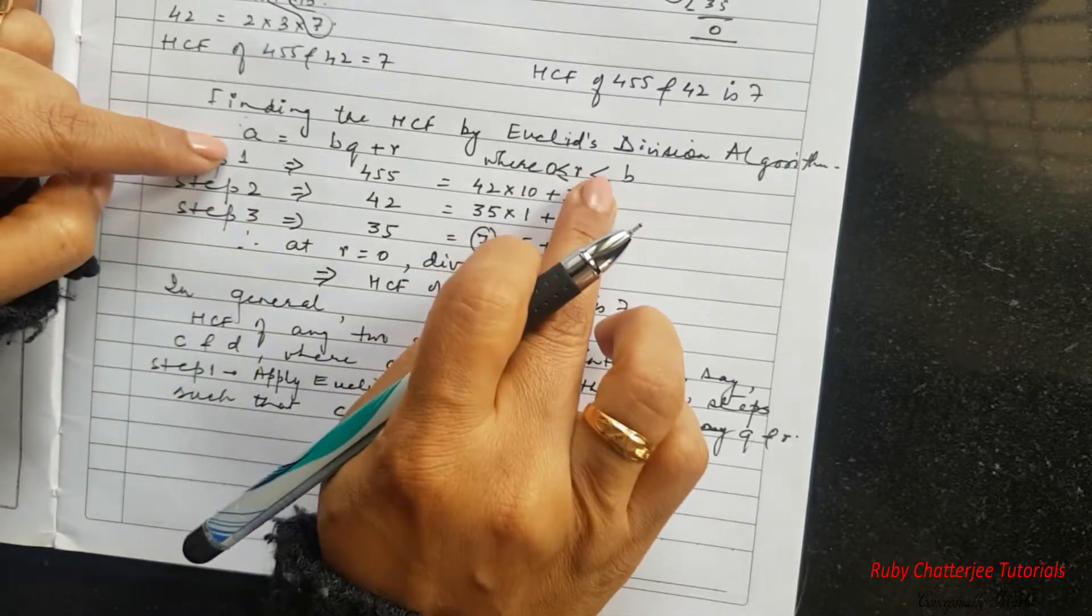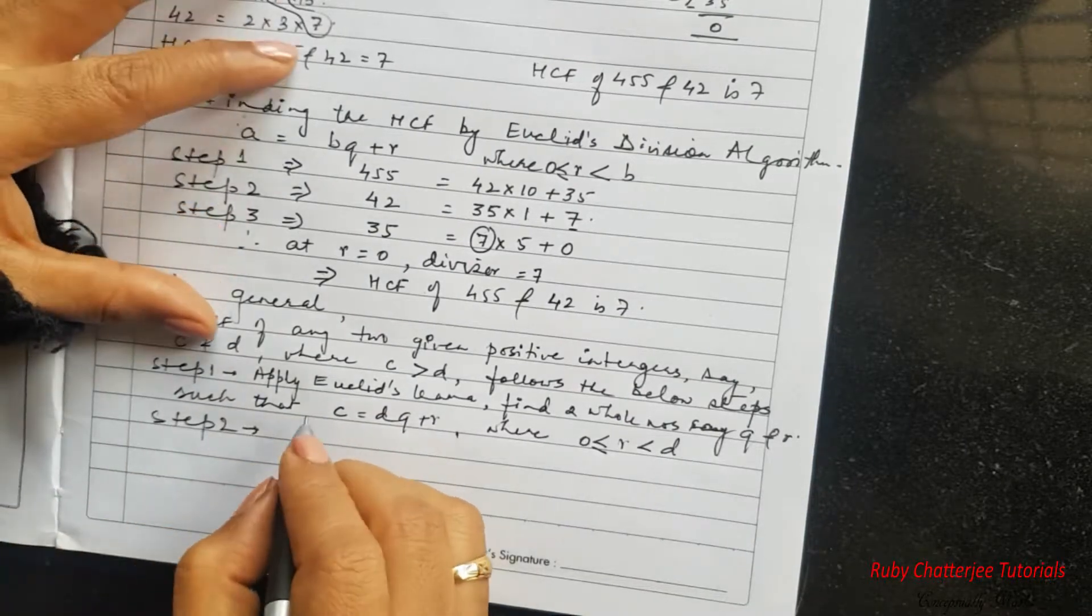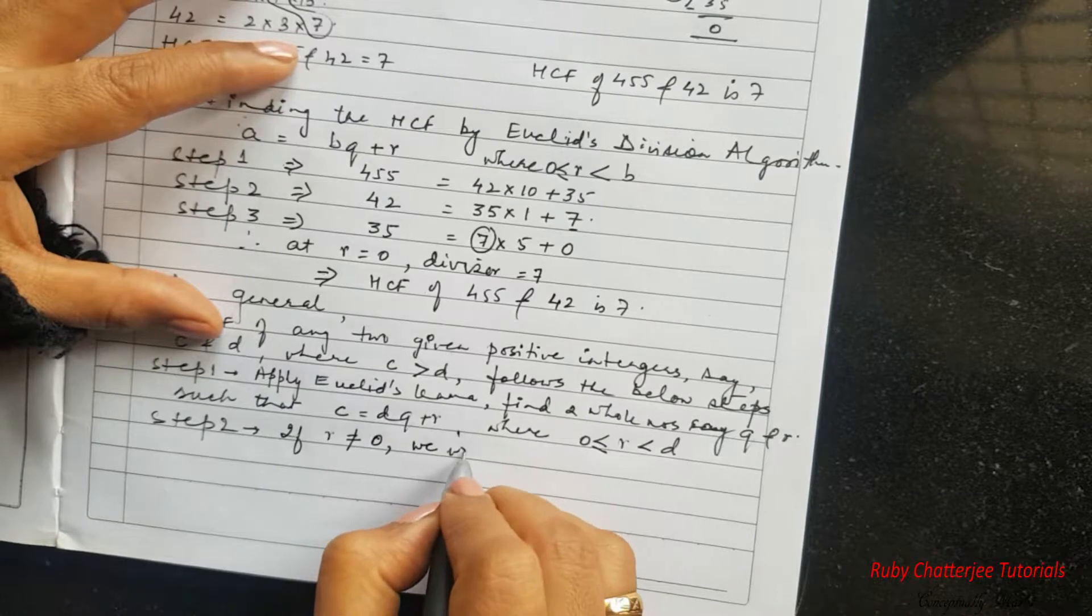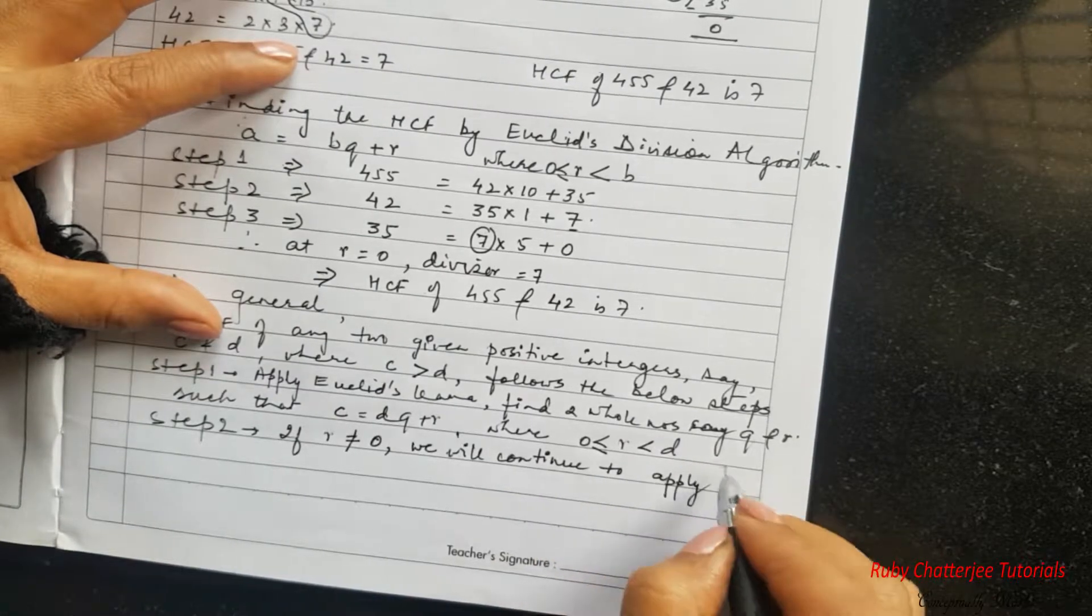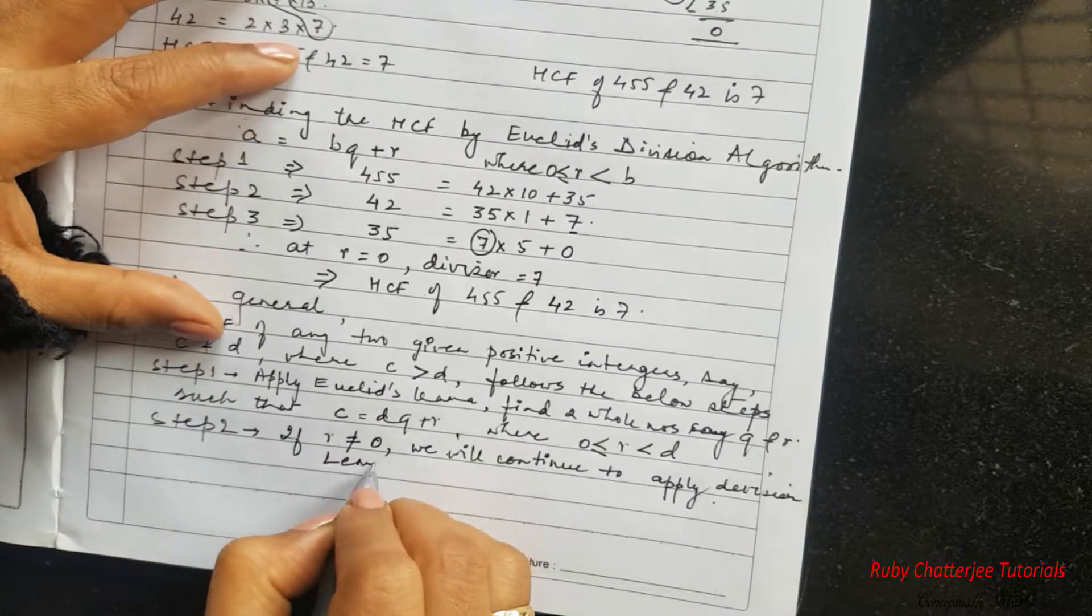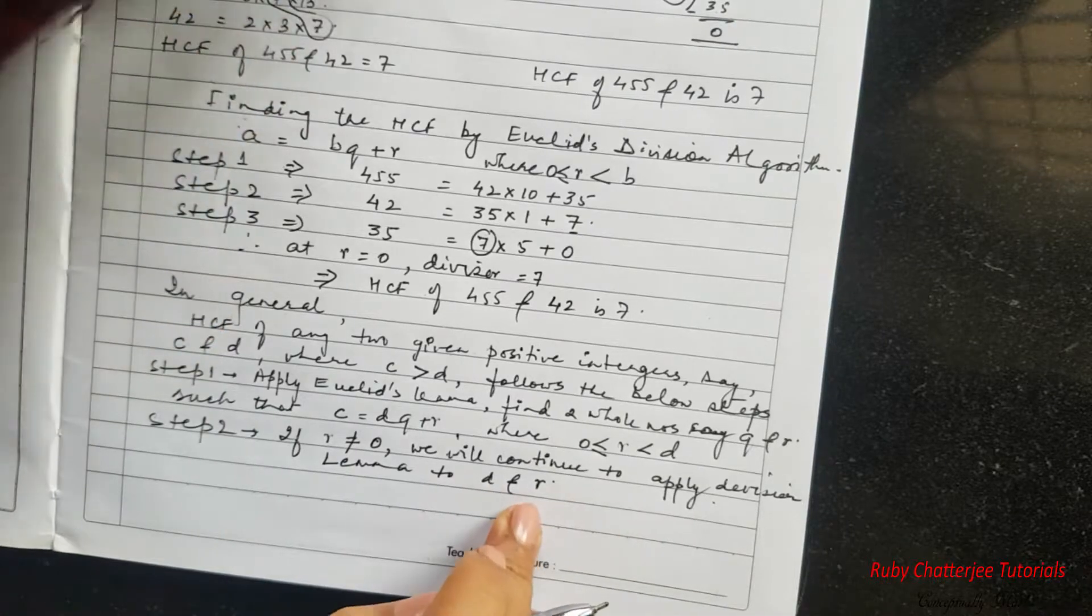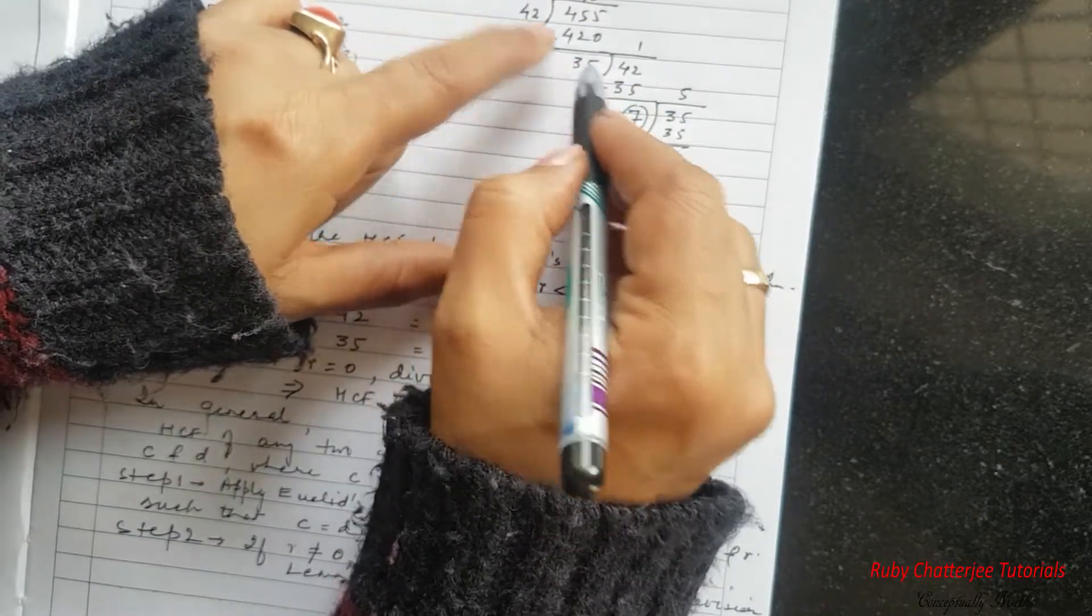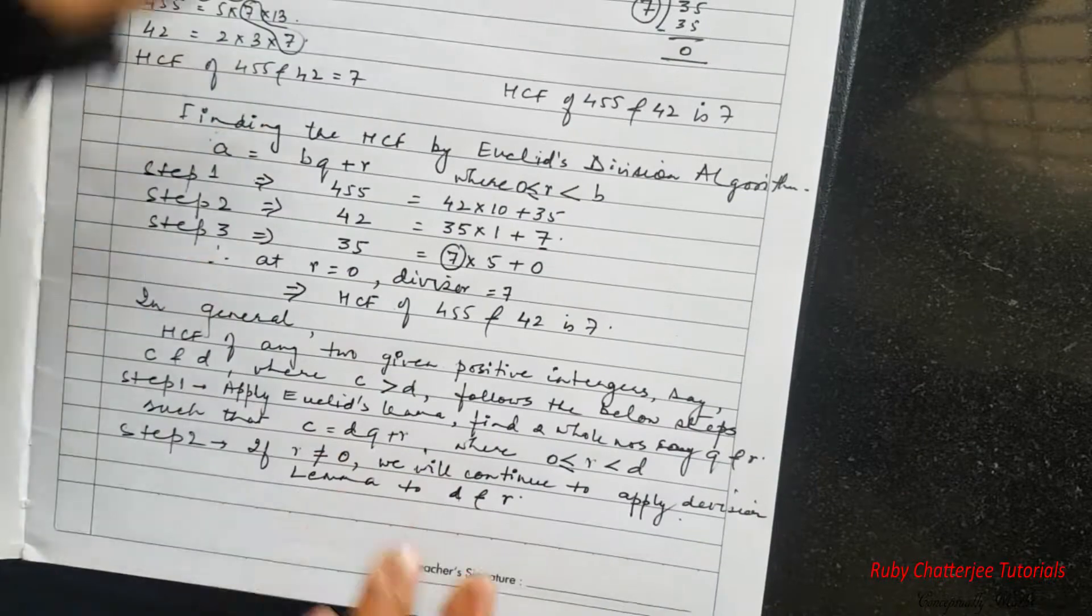So this is the first step. Now in the first step if you don't get a 0 so what are you going to do? You are going to continue in the second step. So step 2 is continue if remainder is not equal to 0, we will continue to apply division lemma to D and R. Why D and R? Because this is the remainder of the first step and this is the D for the first step. So with these two numbers we are again going to apply Euclid's division lemma to the next step. So we will continue this way.